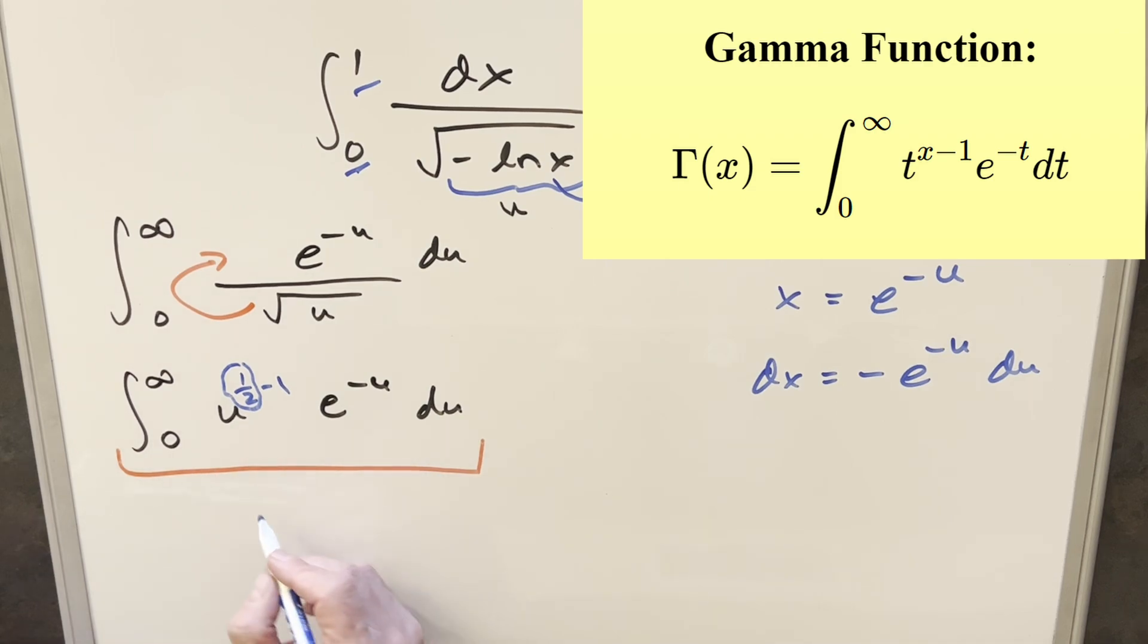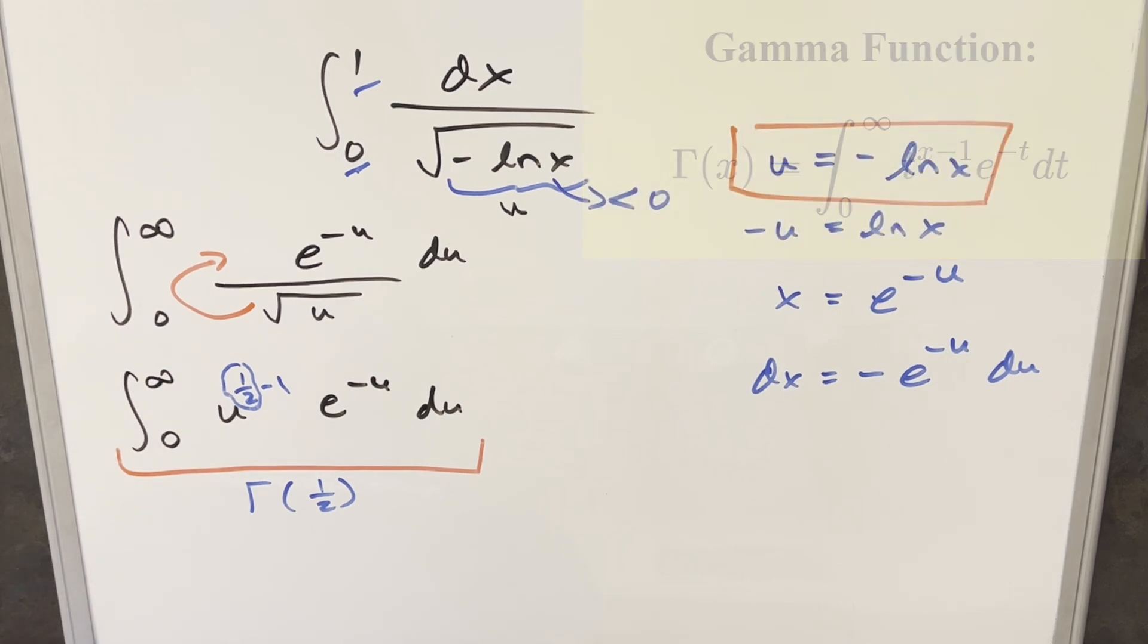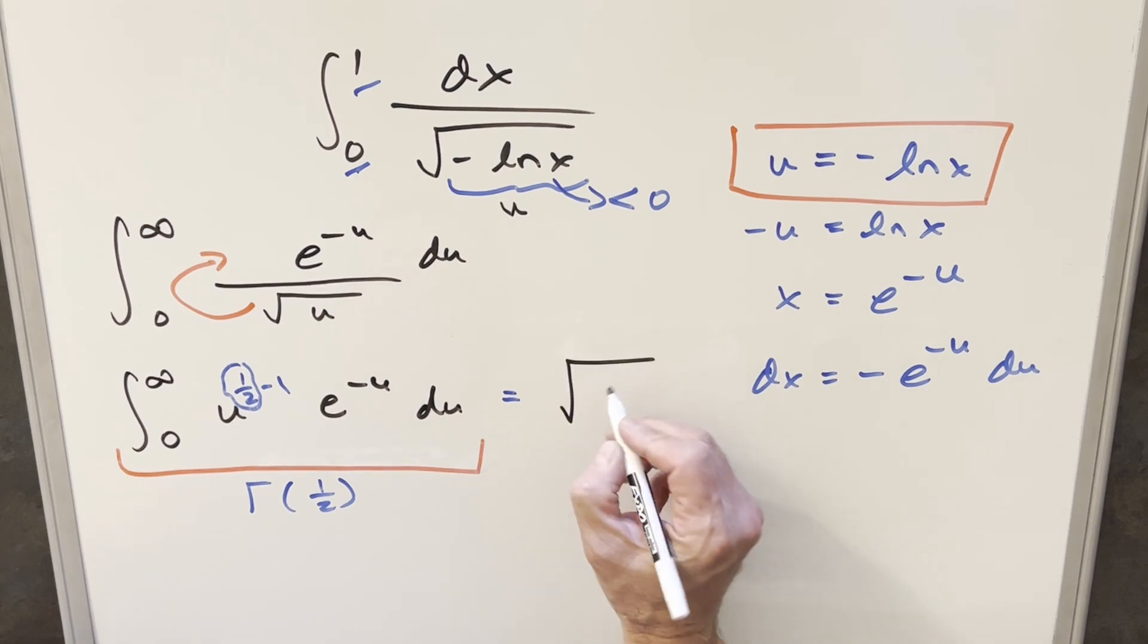Everything here is going to be the same thing as gamma of one half. This is a really well-known value. I usually try to remember one value of the gamma function and you can calculate everything else off that, and the value I remember is gamma of one half. For our final solution, we just get square root of pi.